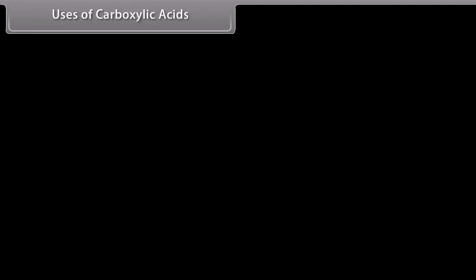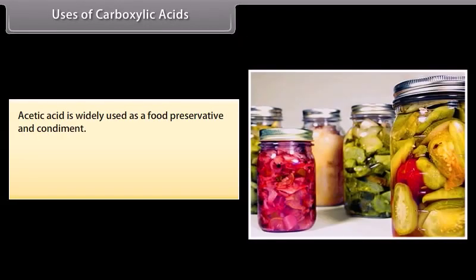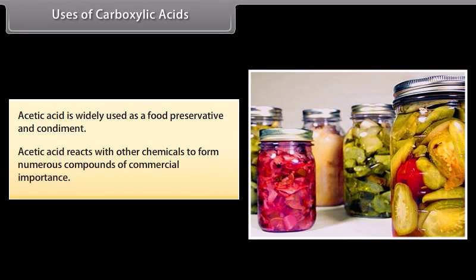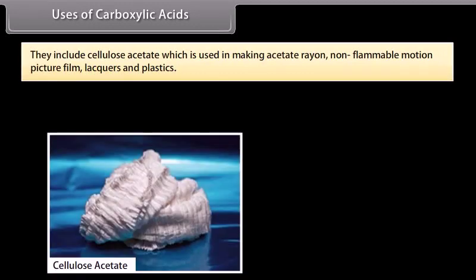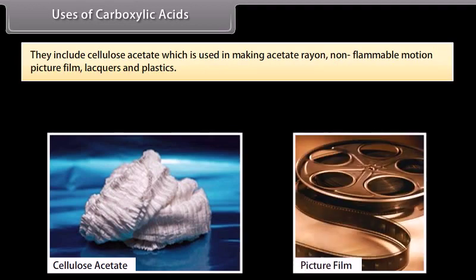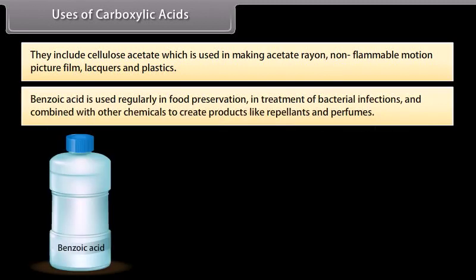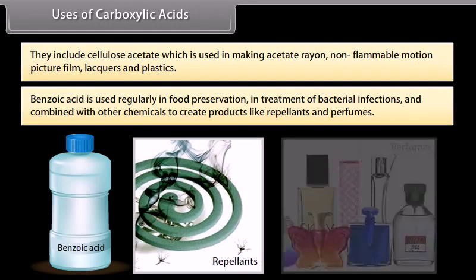Uses of carboxylic acids: acetic acid is widely used as a food preservative and condiment. Acetic acid reacts with other chemicals to form numerous compounds of commercial importance, including cellulose acetate, which is used in making acetate rayon, non-flammable motion picture film, lacquers, and plastics. Benzoic acid is used regularly in food preservation, in treatment of bacterial infections, and combined with other chemicals to create products like repellents and perfumes.